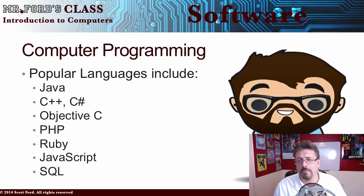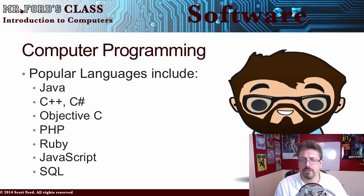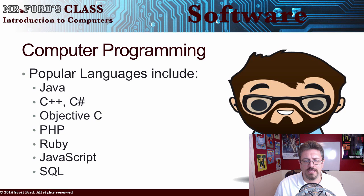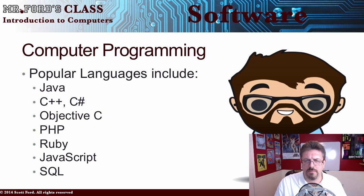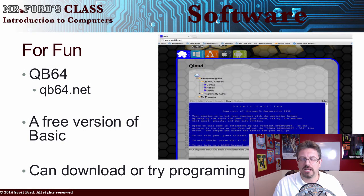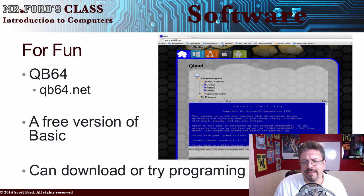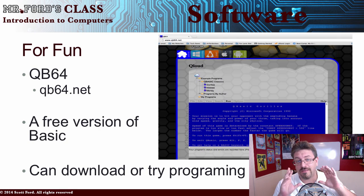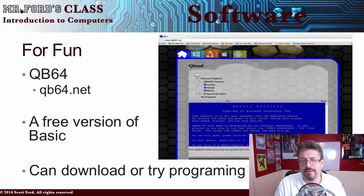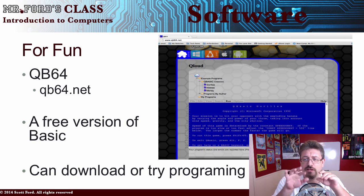If you go online to dice.com, monster.com, or careerbuilder.com and look at computer programmer job listings, they'll specify which languages you must be able to code in. Some of the more popular languages available are Java, C++, C Sharp, Objective-C, PHP, Ruby, JavaScript, and SQL. If you've never done any programming and want to have some fun, try QB64 — a free version of the old-school BASIC programming language, available to download on PC, Linux, or Mac.